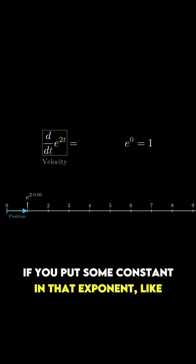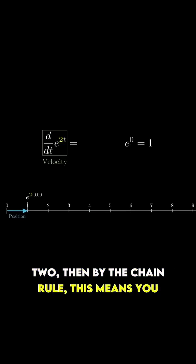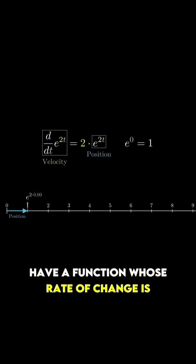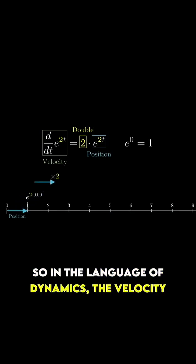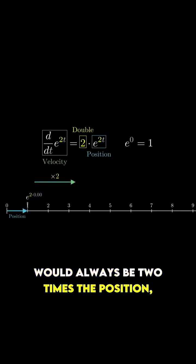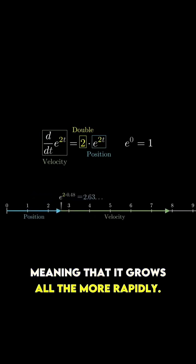If you put some constant in that exponent, like two, then by the chain rule, this means you have a function whose rate of change is exactly two times itself. So in the language of dynamics, the velocity would always be two times the position, meaning that it grows all the more rapidly.